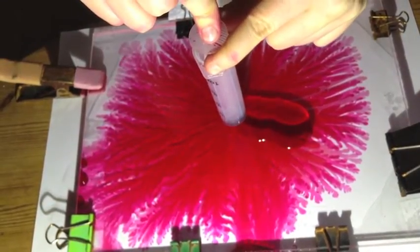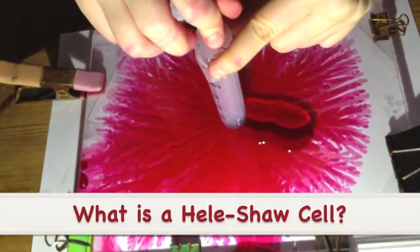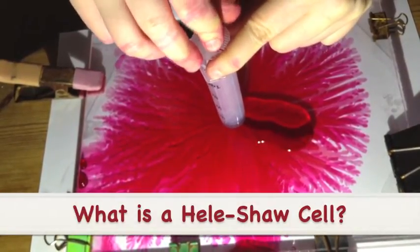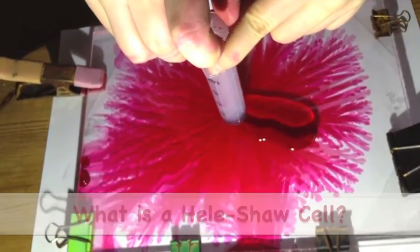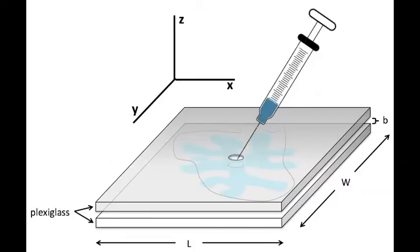What is a Hele-Shaw cell? Well, it was invented by Henry Hele-Shaw circa 1898. Simply put, it is a system of two parallel plates separated by a very small gap size, as shown by the cartoon drawing.